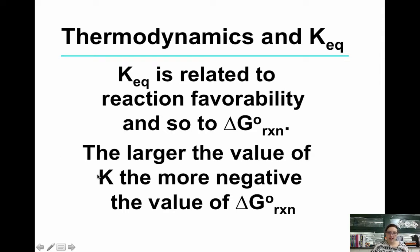The larger the value of K, the more your products are favored. The larger the value of K, the more negative the delta G. So if you have a KEQ that's very large, that means your products are very favored, which means it's probably a very spontaneous reaction, so delta G is going to be negative.